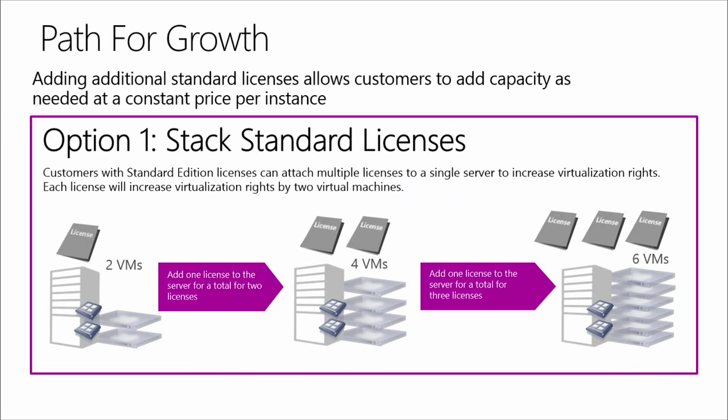Let's look at options available to customers who need to closely manage their growth. Customers can increase their virtualization instances in two ways. For customers that want a highly virtualized environment, they can choose to assign multiple Standard Edition licenses to a single server — often referred to as stacking licenses. With each additional Standard license assigned to a server, a customer increases their virtualization rights by two, ensuring a constant price per instance and controlled, budgeted growth.